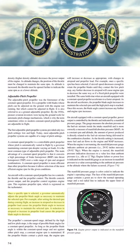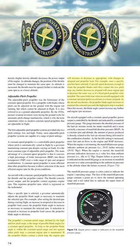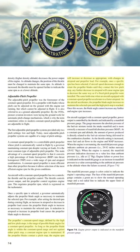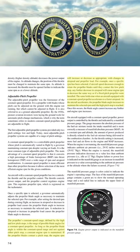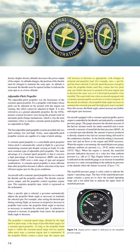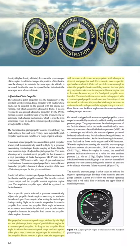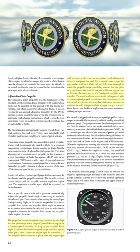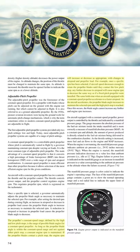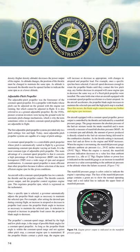A reduction in airspeed or increase in propeller load causes the propeller blade angle to decrease. The propeller's constant speed range, defined by the high and low pitch stops, is the range of possible blade angles. As long as the blade angle is within the constant speed range and not against either pitch stop, a constant engine RPM is maintained. If the propeller blades contact a pitch stop, the engine RPM will increase or decrease with changes in airspeed and propeller load. Once a specific RPM is set, if airspeed decreases enough to rotate the blades to the low pitch stop, further decrease in airspeed will cause engine RPM to decrease as if a fixed pitch propeller were installed.